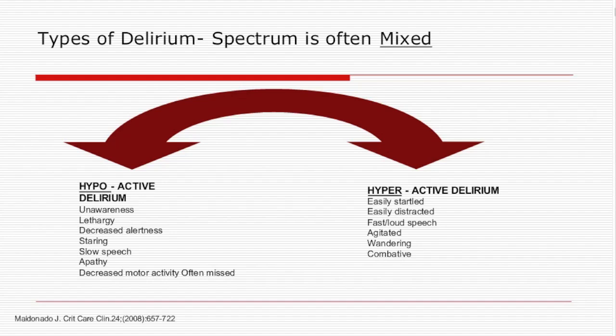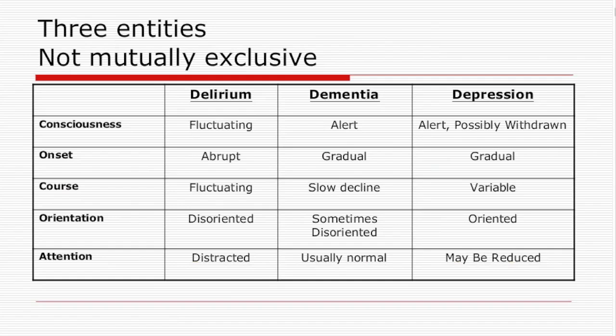Many nurses enjoy taking care of those pleasantly confused patients because they smile a lot and are much less work for staff. Even as physicians round and see these patients each morning, they find them pleasant and assume nothing has changed. It's also important to recognize that there are different entities that can look very similar — delirium, dementia, and depression. Some symptoms can overlap, and nothing stops a patient from having all three. We frequently label patients as demented and fail to recognize other neurological changes contributing to their behavior problems.